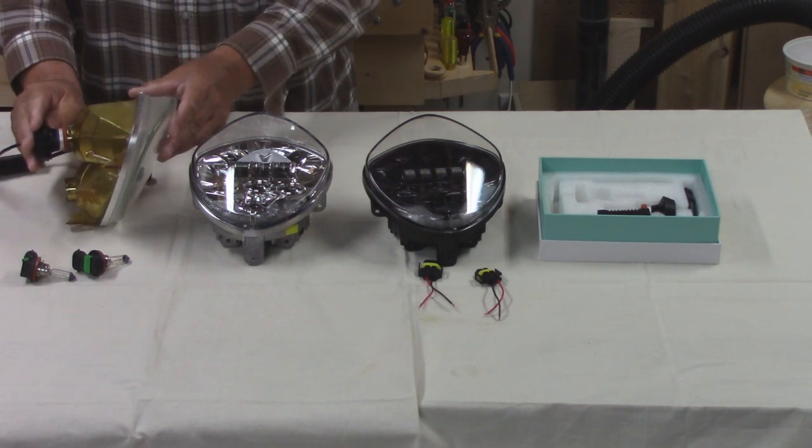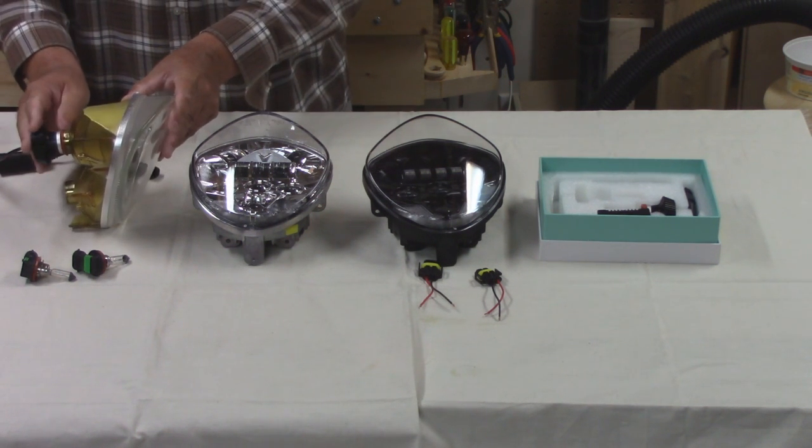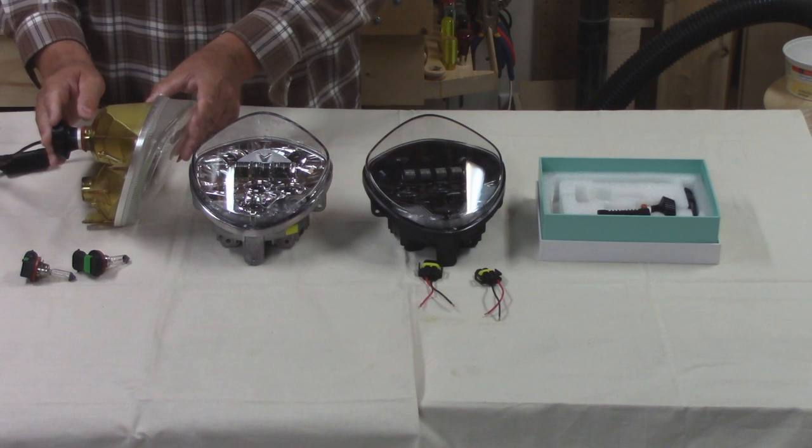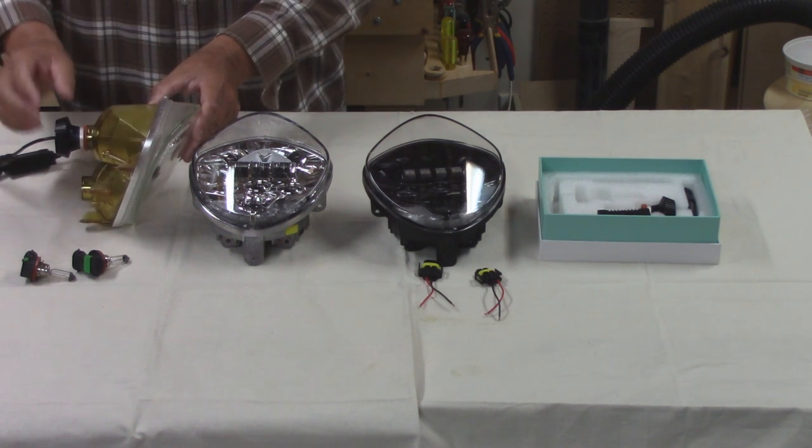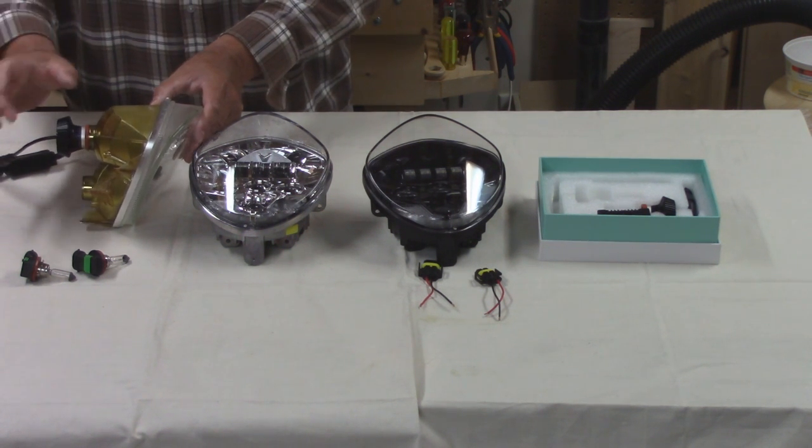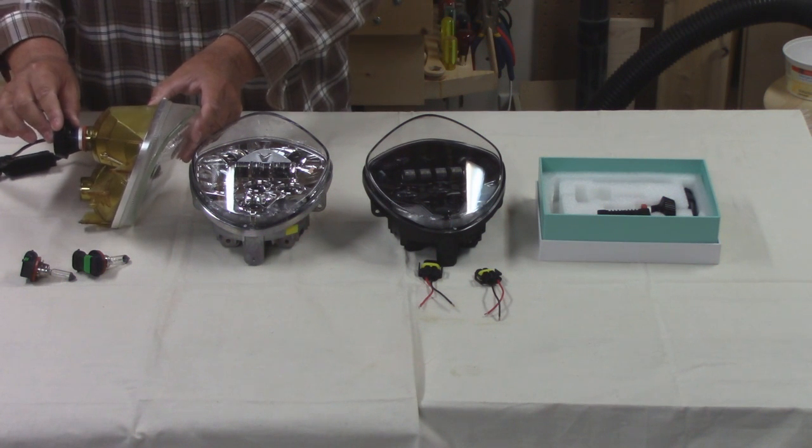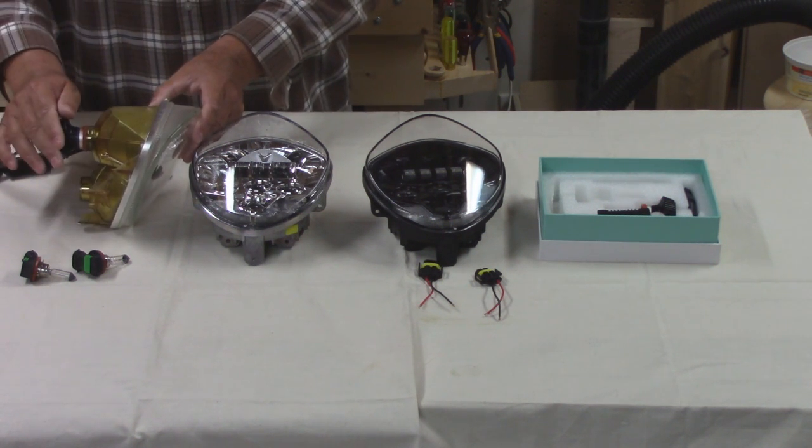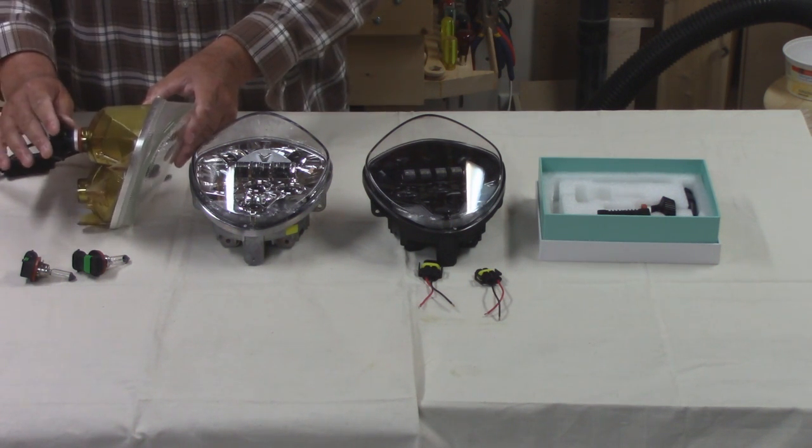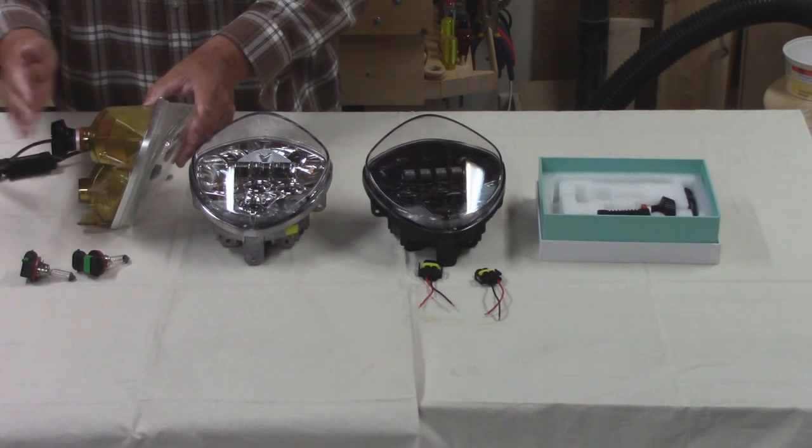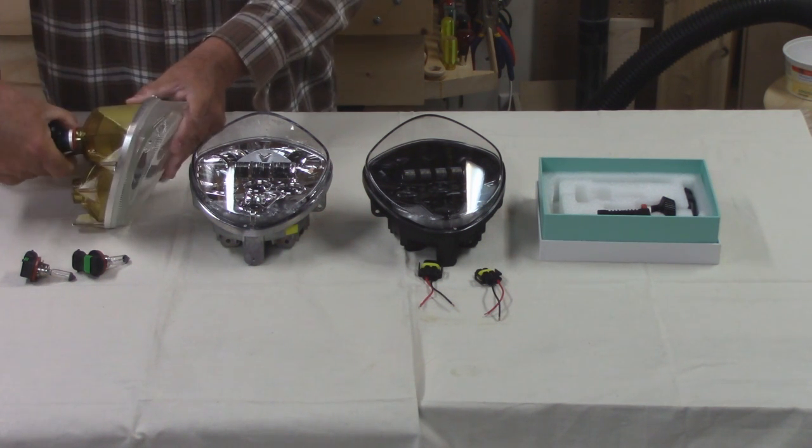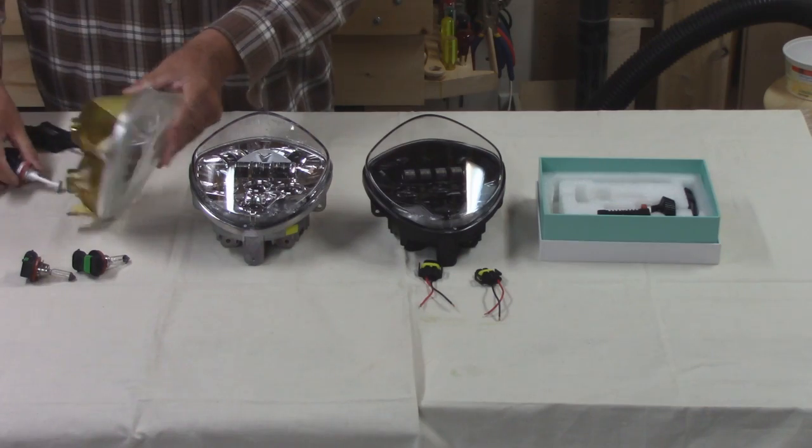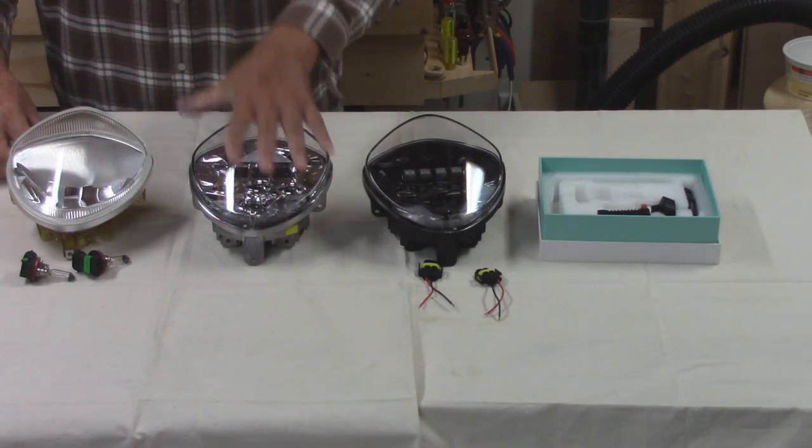However, I found they stick out too far at the back. And when you try to install it into your bike, it hits the wiring harness inside your fairing. Now, you could take the fairing apart and relocate the wiring inside. It would work, but I prefer not to go that far and I'll just use the ones in the housing.